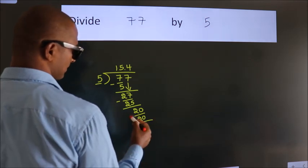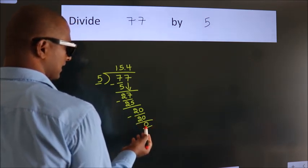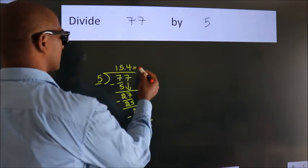Now we subtract. We get 0. We got remainder 0. So this is our quotient.